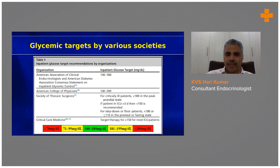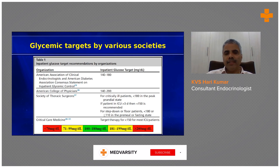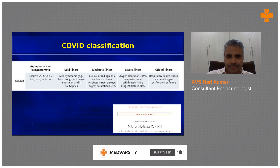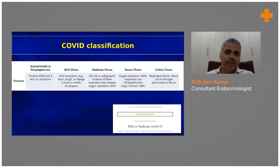This target includes both the fasting and post-prandial states. Whenever you are managing a patient in the ward, remember that glucose should most of the time range below 200 and not below 100.